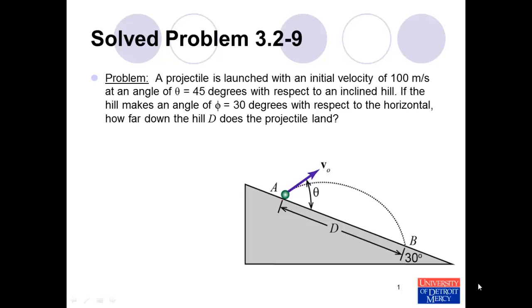This problem is from the textbook Conceptual Dynamics. We are going to perform an extension of solved problem 3.2-9 from the textbook. The problem states: a projectile is launched with an initial velocity of 100 meters per second at an angle theta equals 45 degrees with respect to an inclined hill. If the hill makes an angle of phi equals 30 degrees with respect to the horizontal, how far down the hill D does the projectile land?